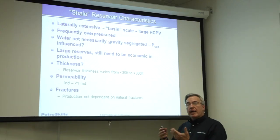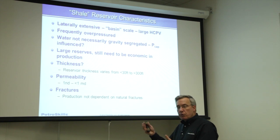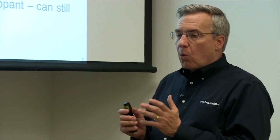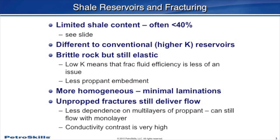We initially thought natural fractures were essential to the commerciality of unconventionals, but we know that's not the case now — we can create our own fractures. What we've found is that the shale content can be very important to the economic viability. Generally speaking, the lower the shale content the better. Often less than 40 percent is what we find in the better shales, sometimes up to 50 percent, but generally less than 40.